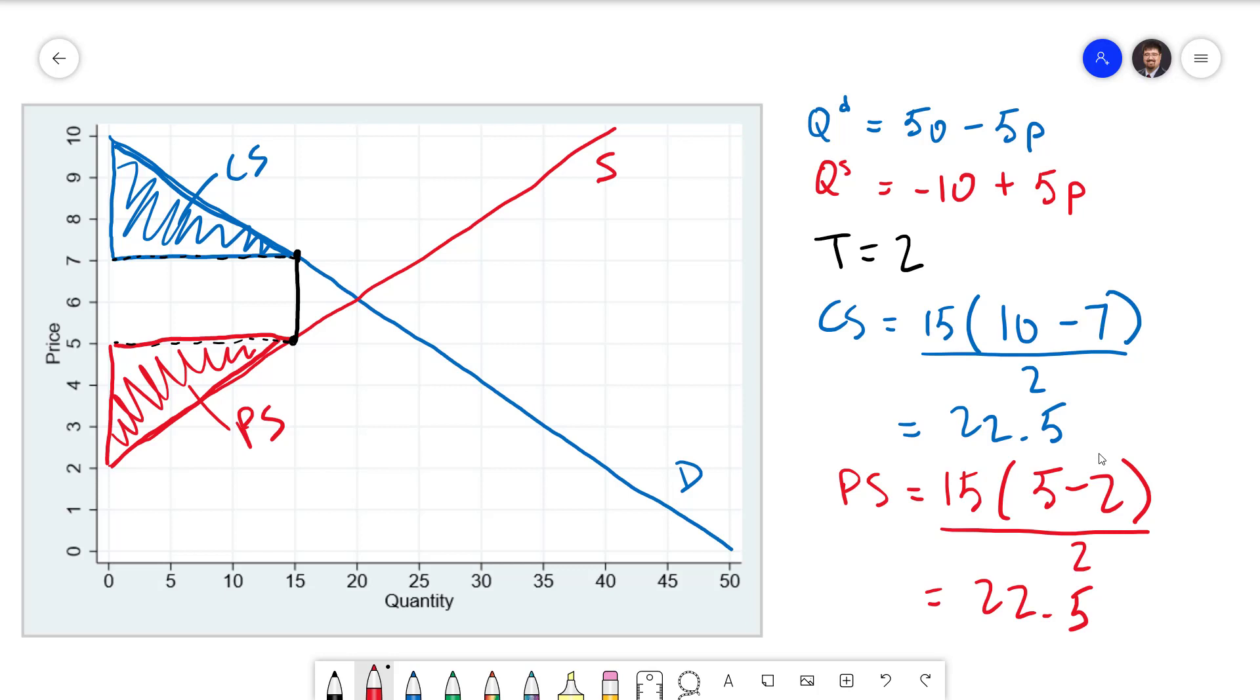Normally we would now calculate total surplus just by adding these two up, but with the tax that's not the end of the story because we have a third entity here: the government. So we need to take them into account.